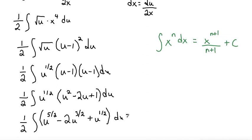So now, when I take my integral using that rule, I'll bring over the 1 half and then that'll be times u, 5 halves plus 1 is 7 halves, the u to the 7 halves over the new exponent, which is 7 halves minus 2 u to the 3 halves plus 1 would be 5 halves over 5 halves plus u to the 1 half plus 1 is 3 halves over the new exponent, which is 3 halves.